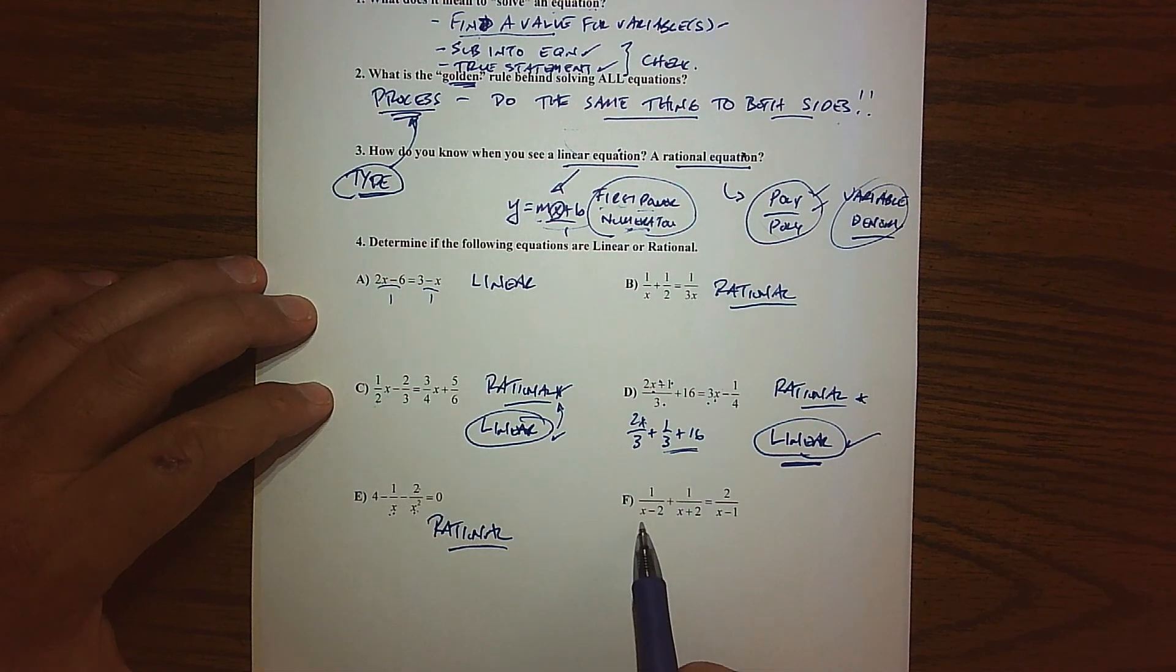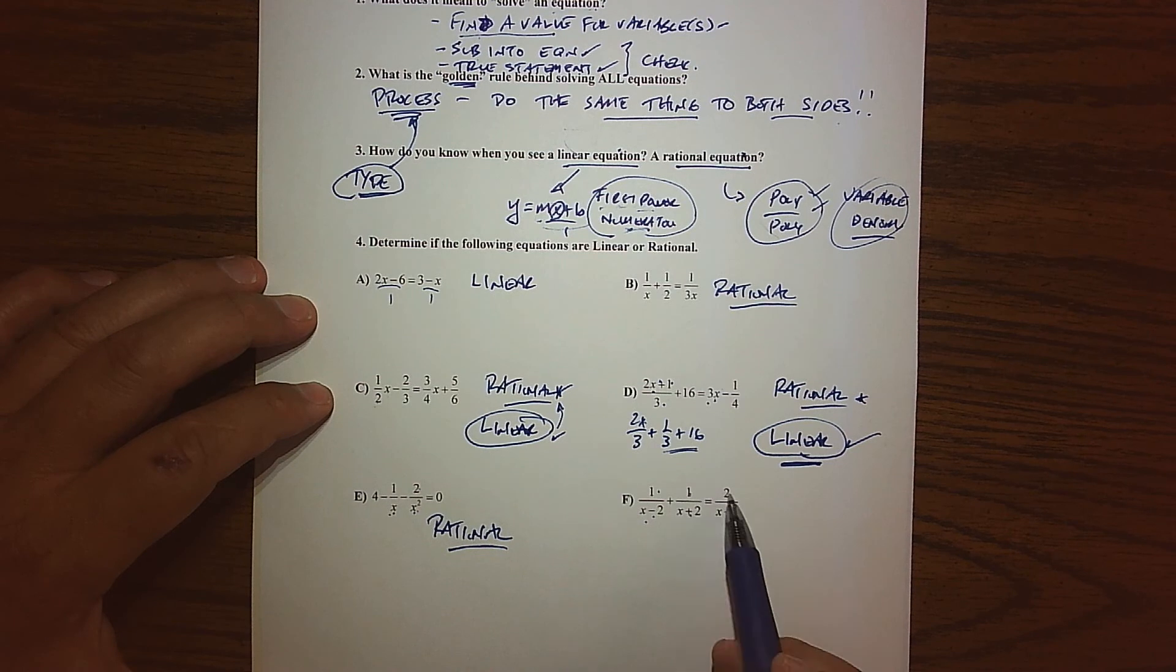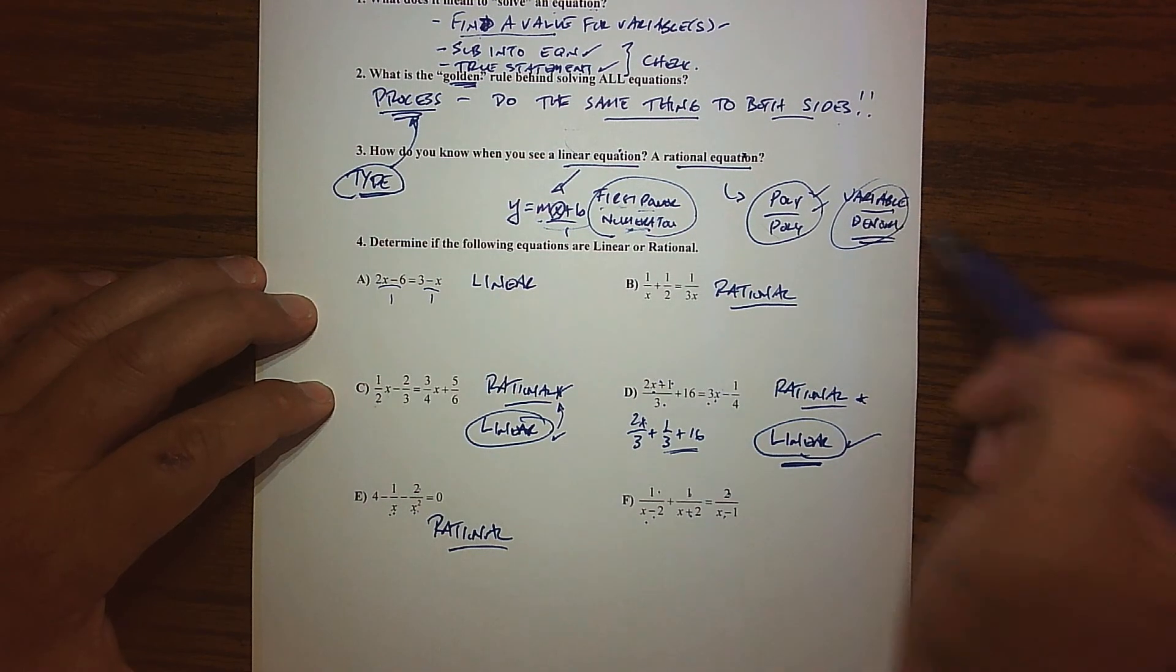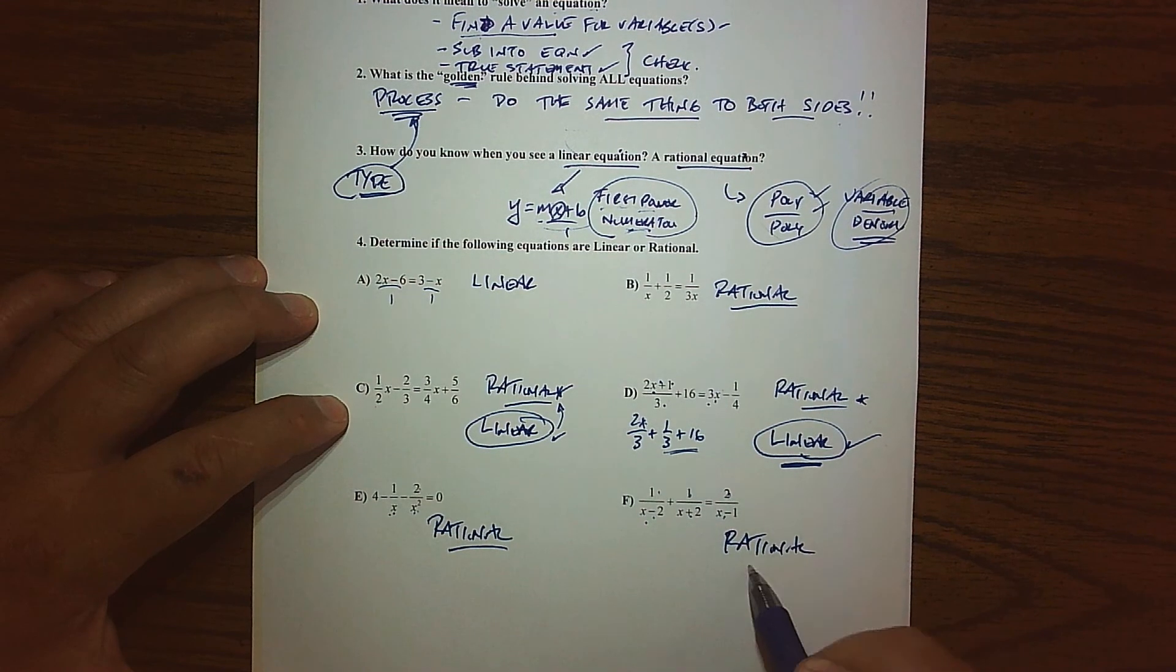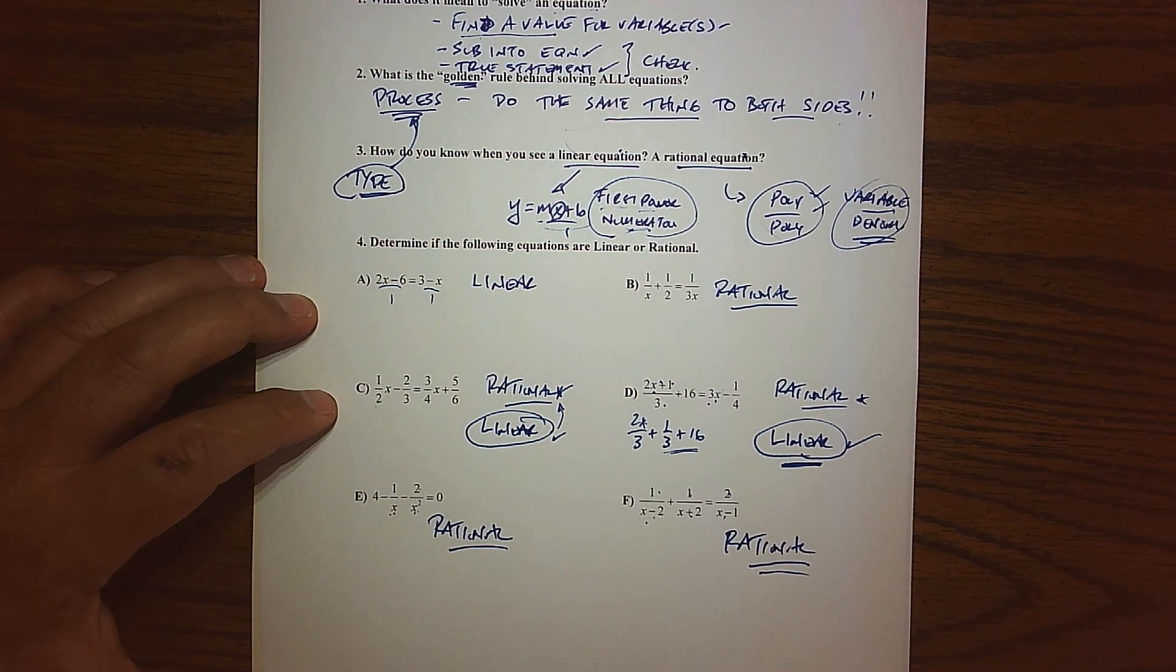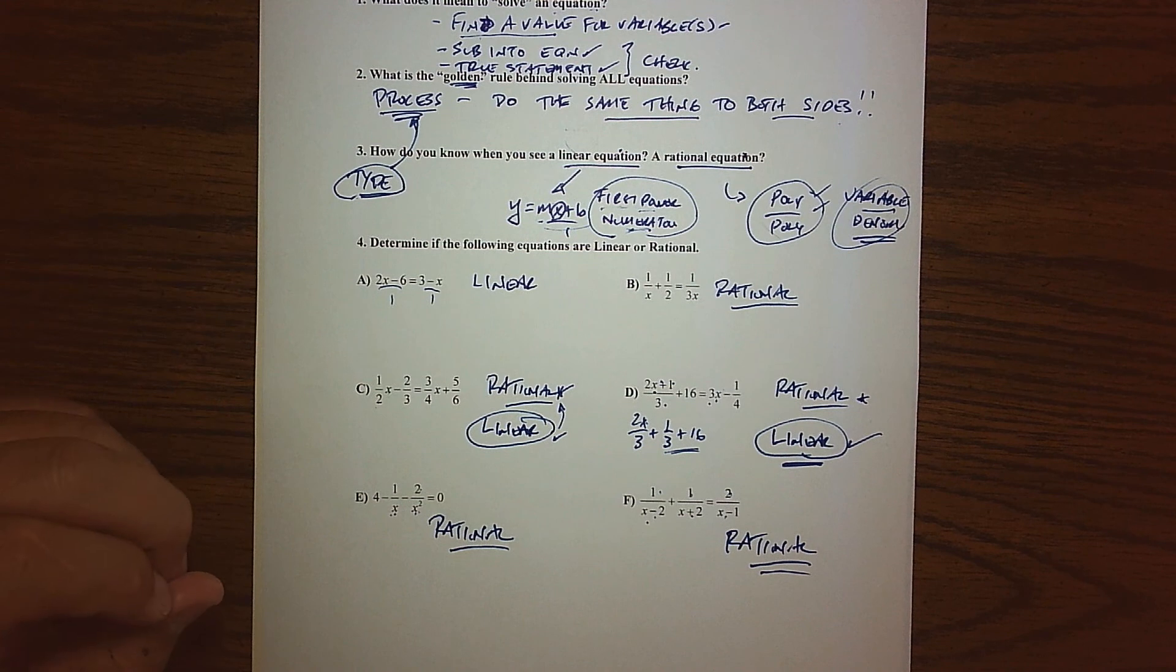And then last but not least, we have, again, we have technically a monomial divided by a binomial. And so we have a poly over a poly, a poly over a poly, a poly over a poly. The variable is down in the denominator. So this one would be rational. So there's your first categorizations.